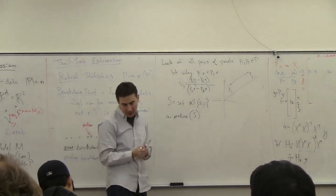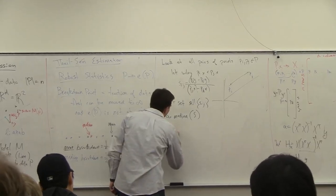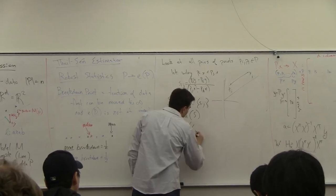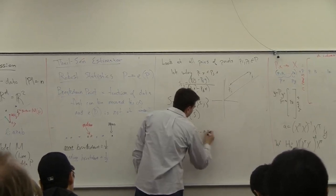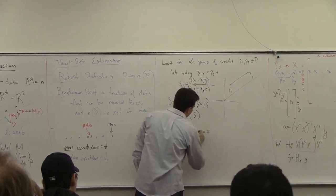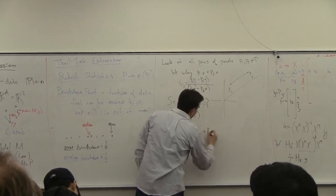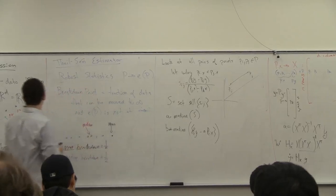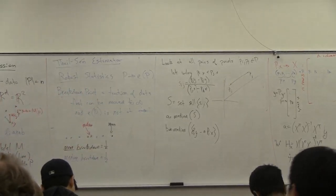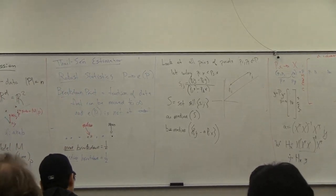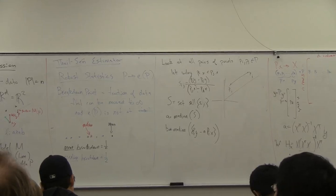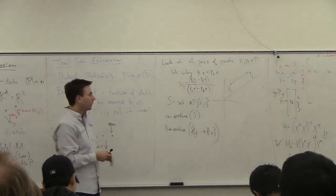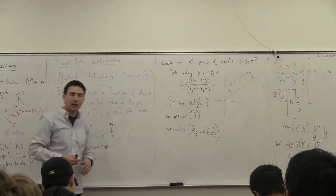You can also calculate B by saying B equals the median of the set of (P_i.y minus A times P_i.x). So after you've found the slope, you know the line, and then you look at all of the differences from the prediction and you move this up and down so it's half above and half below. That's basically what this offset is doing. So this line described by A and B is the Theil-Sen estimator.